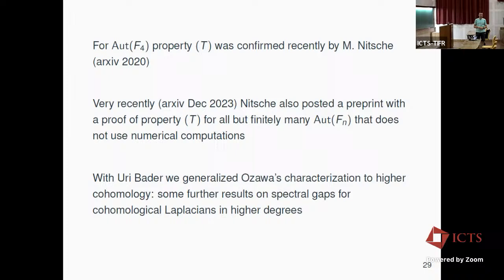Q: Do you know for which sequence of n Gilman's theorem gives the surjections onto alternating groups? A: I don't think it's very explicit. If I remember correctly, it's an existence statement — there's not much one can say about the specific sequence.